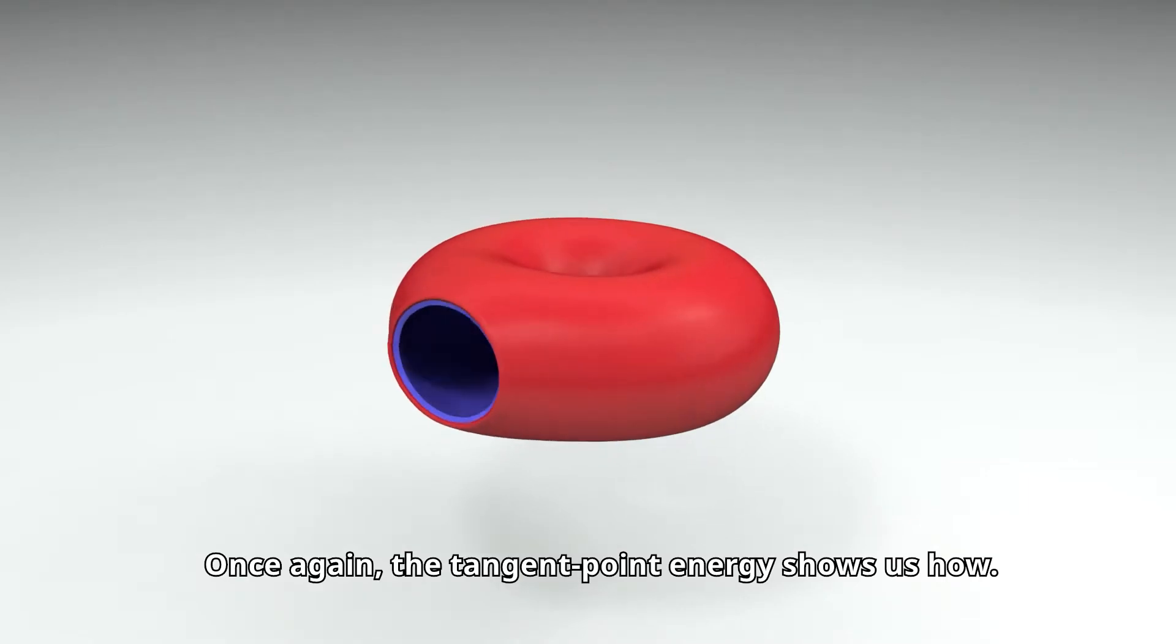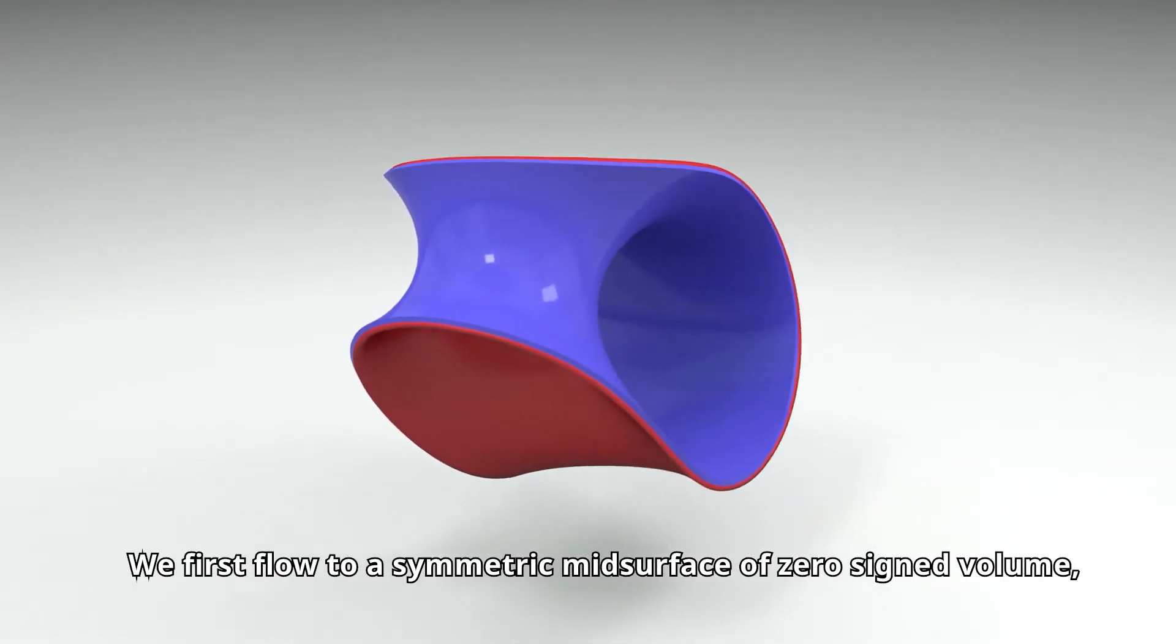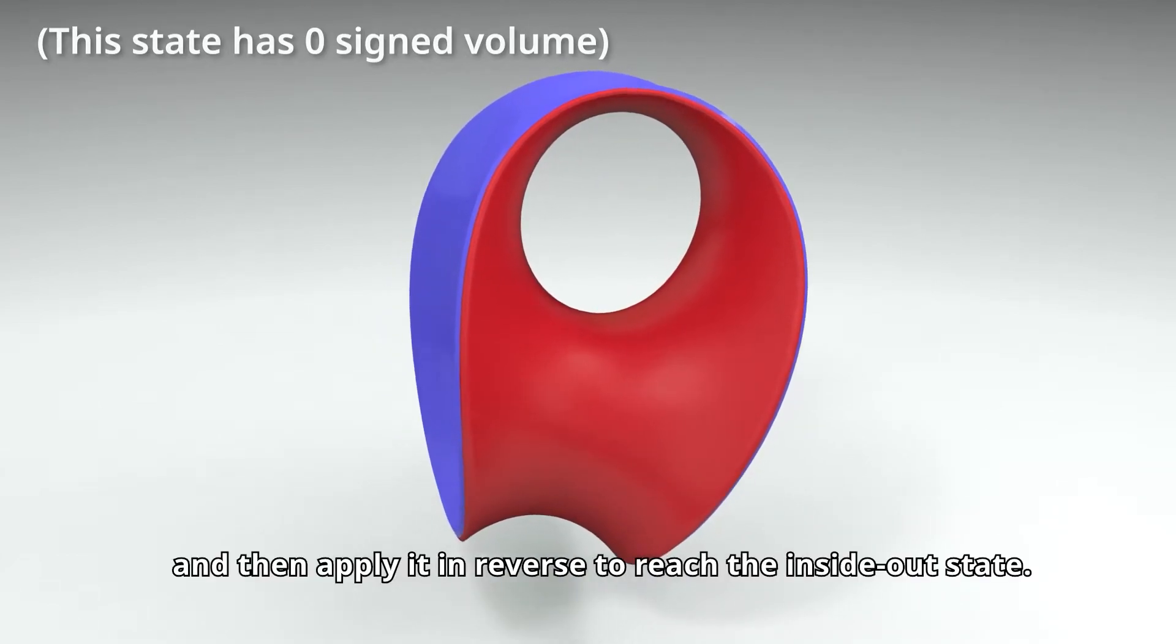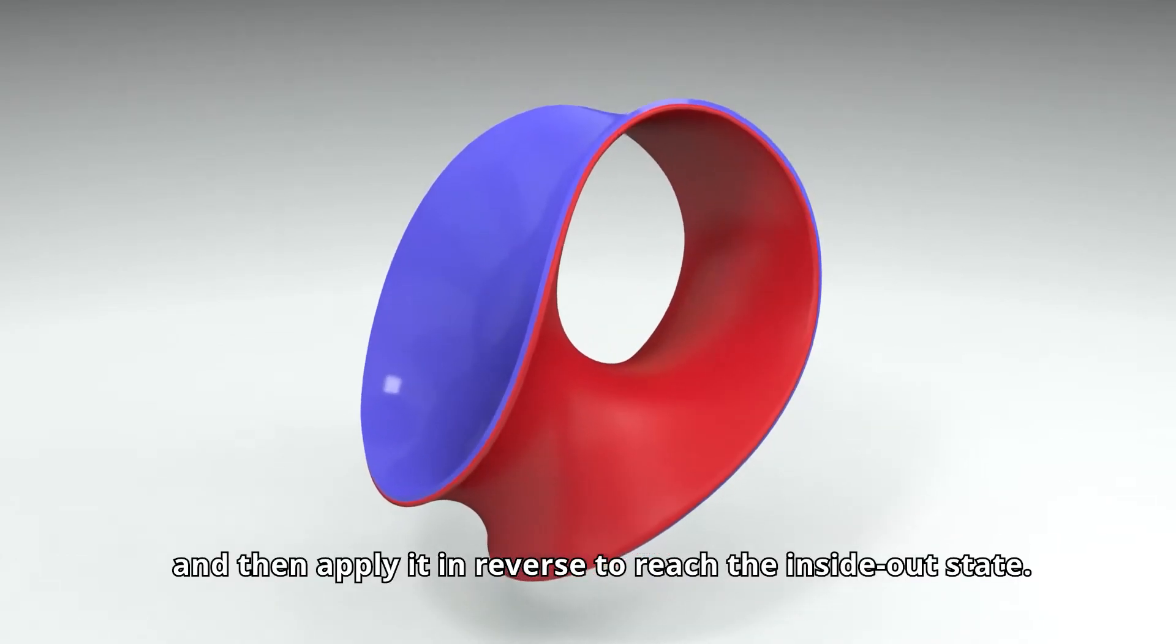Once again, the tangent point energy shows us how. We first flow to a symmetric mid-surface of zero-signed volume, mirror the deformation, and then apply it in reverse to reach the inside-out state.